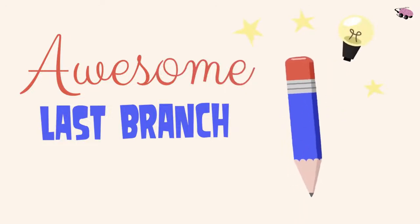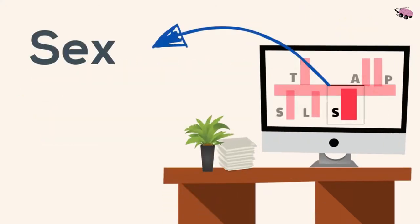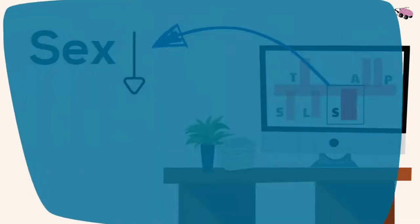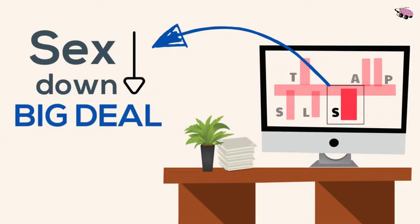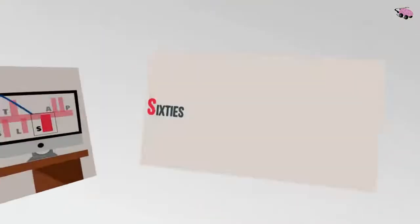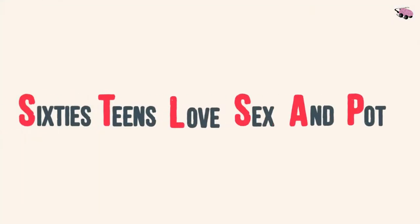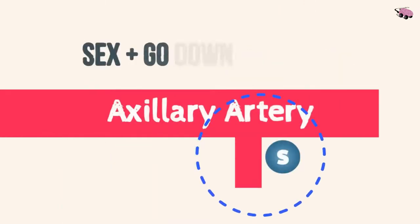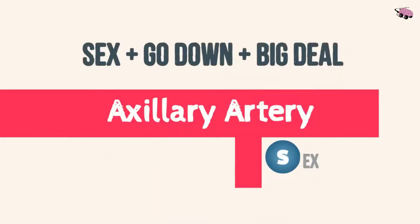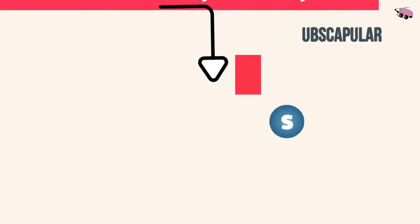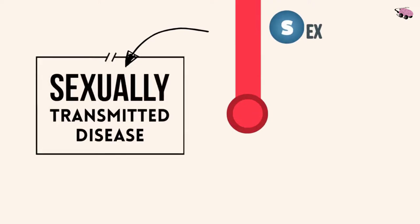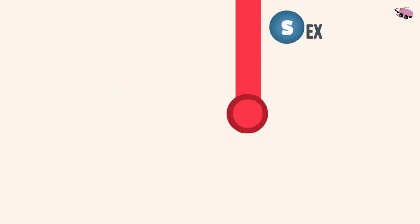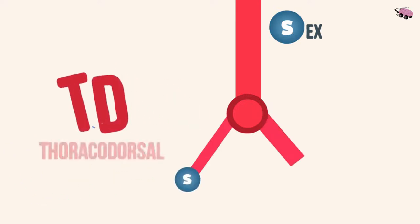Now only one more branch to go. Sex — the subscapular trunk — when it goes down, it's a big deal. It's a big trunk consisting of two sub-branches. And as you know, when you have sex, you get a sexually transmitted disease — an STD. That stands for scapular circumflex artery and thoracodorsal artery.